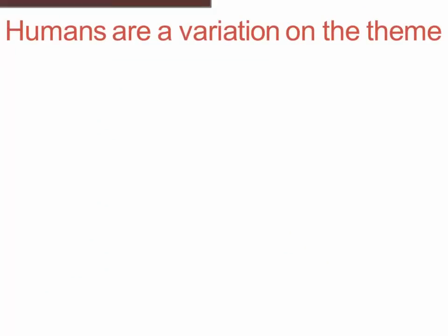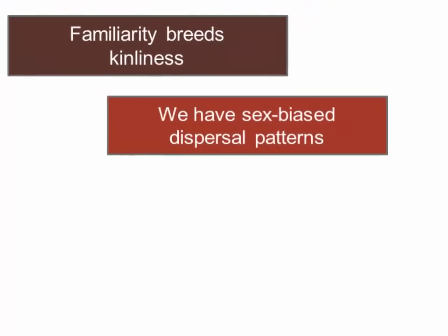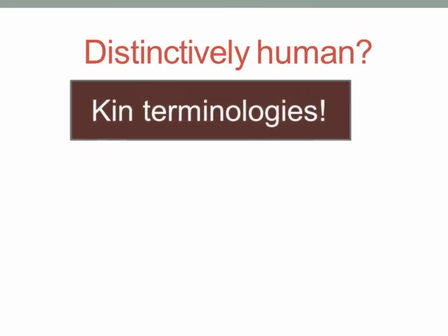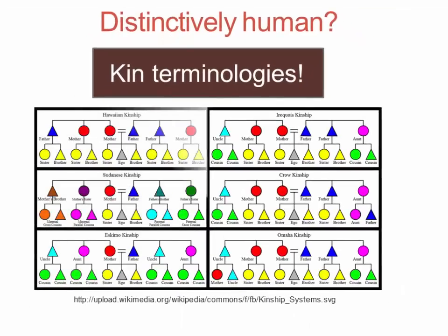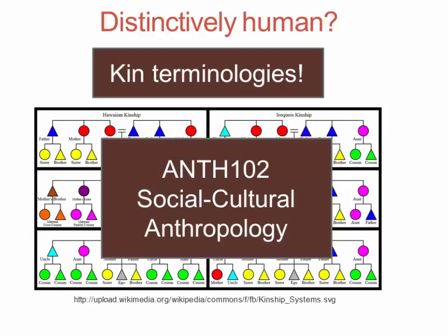Humans are just a variation on this theme: familiarity breeds kinliness. A key mechanism of kin recognition is simply familiarity and being around. Humans do have sex-biased dispersal patterns, but what makes us different is we have a very wide variety of those patterns, and sometimes it involves both sexes dispersing in highly irregular ways. We do discriminate kin from non-kin and closer kin from more distant kin in a rather unique fashion — what social anthropologists call kin terminologies. That topic is the bane of all anthropology students, but if you want to learn more you can start with ANTH 102, Social-Cultural Anthropology, and there is an upper-division course that focuses just on kinship.